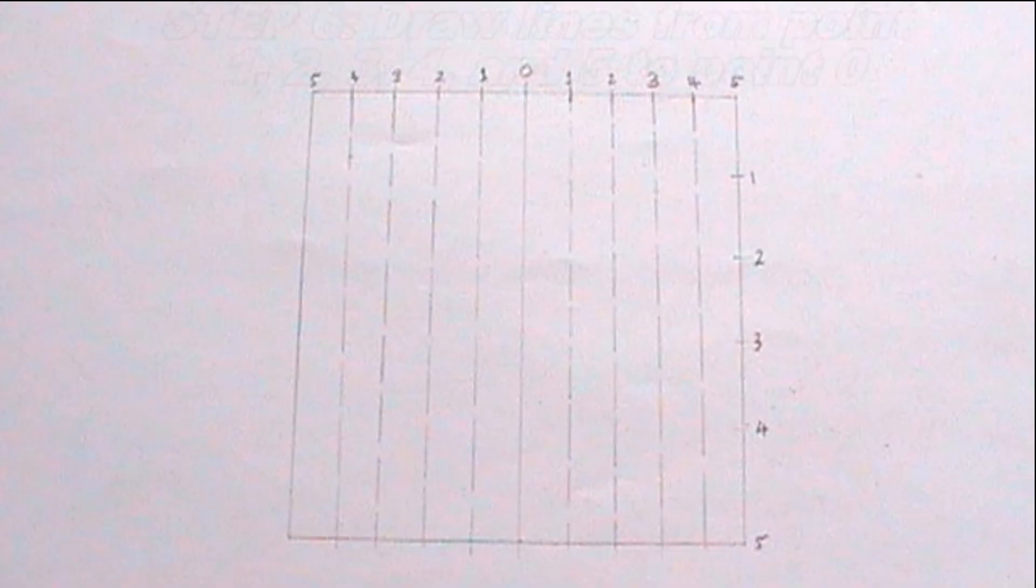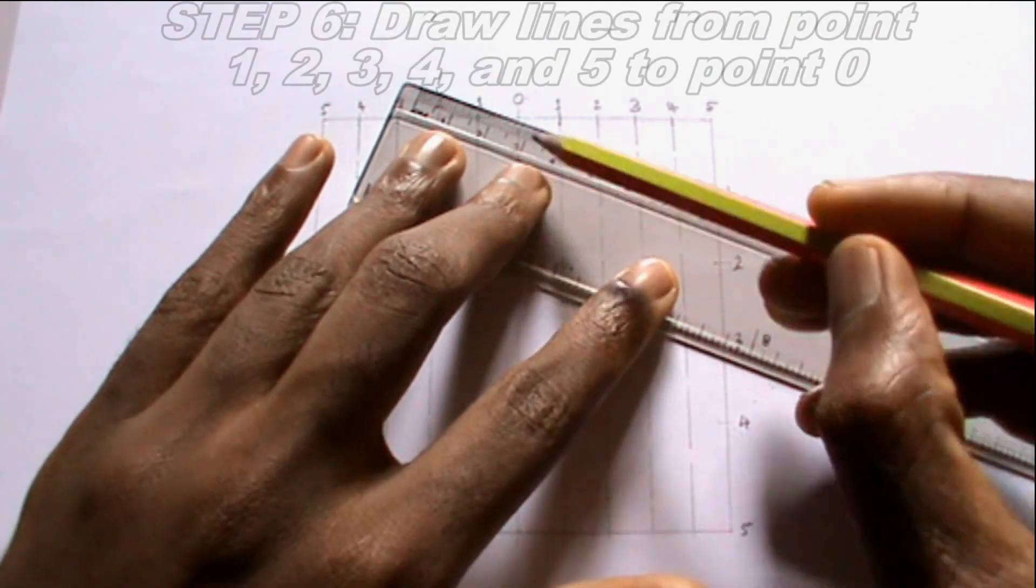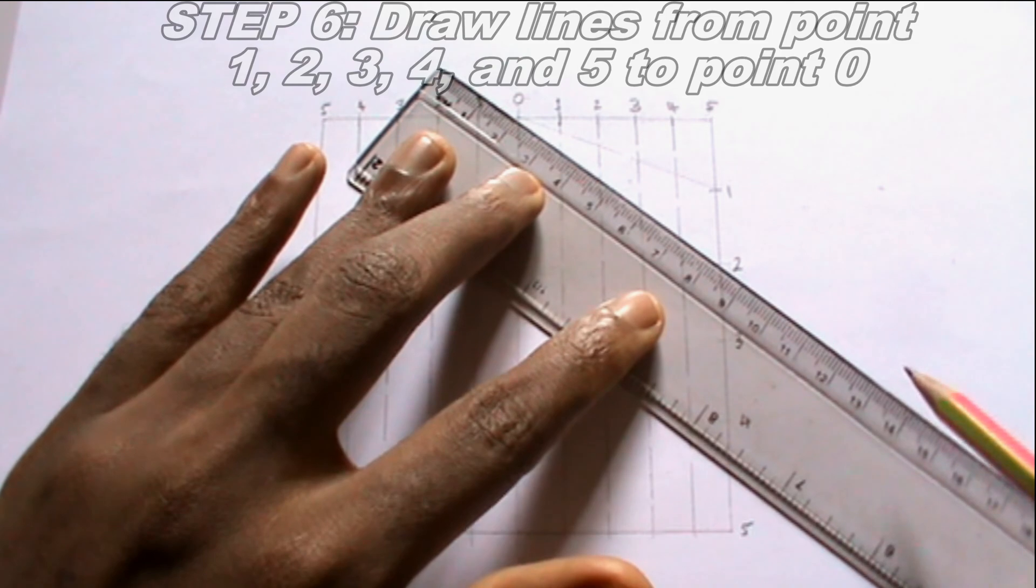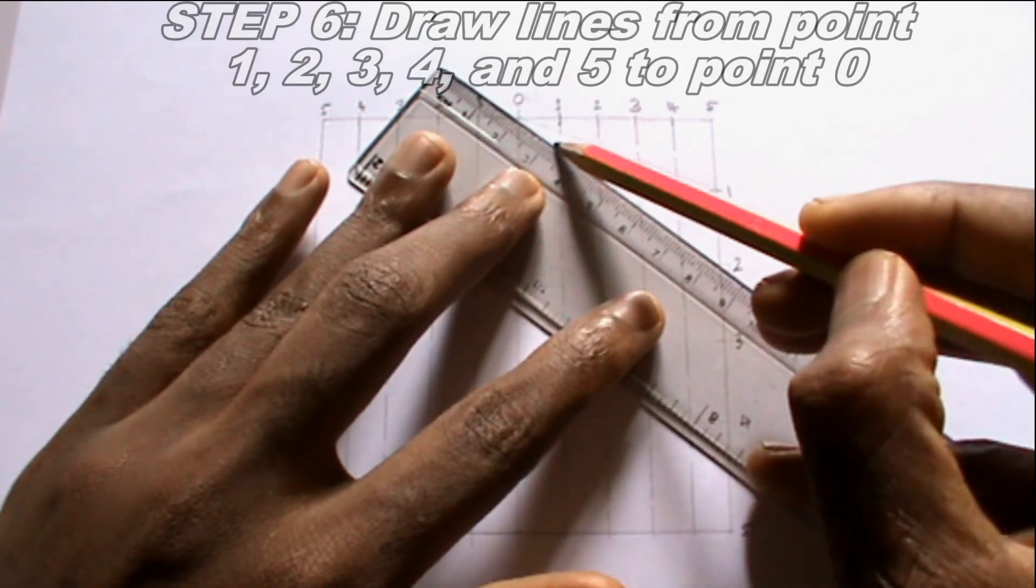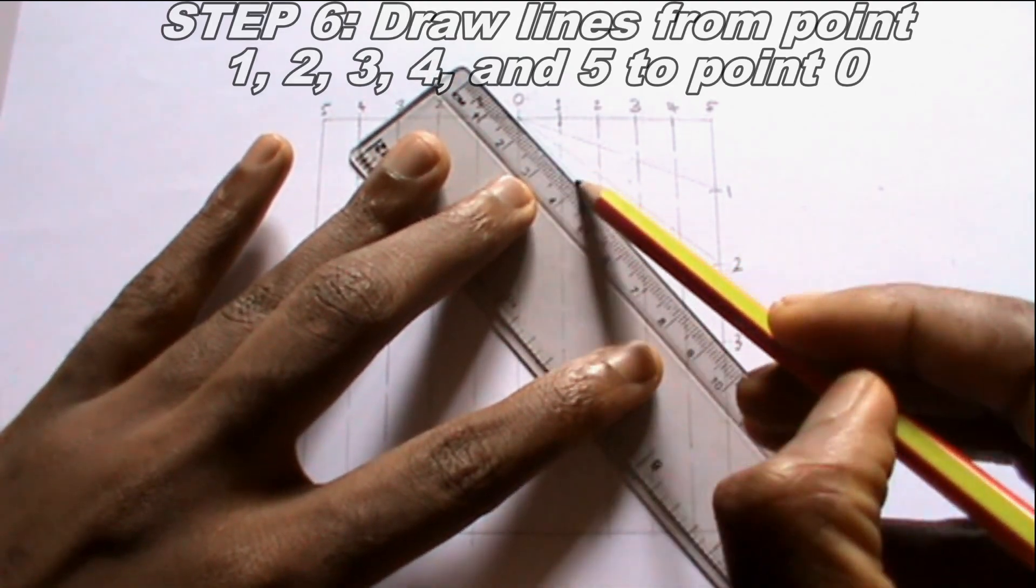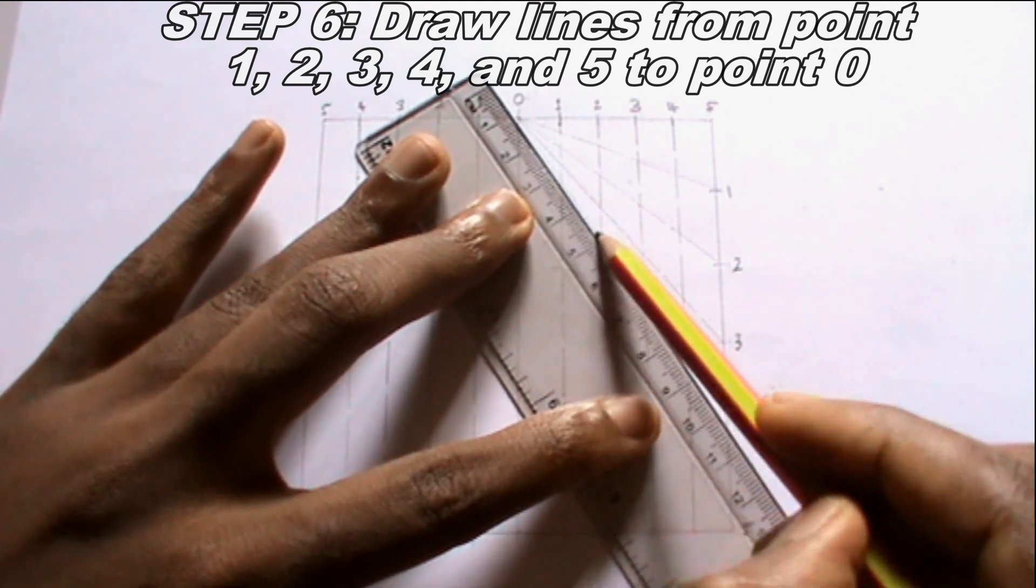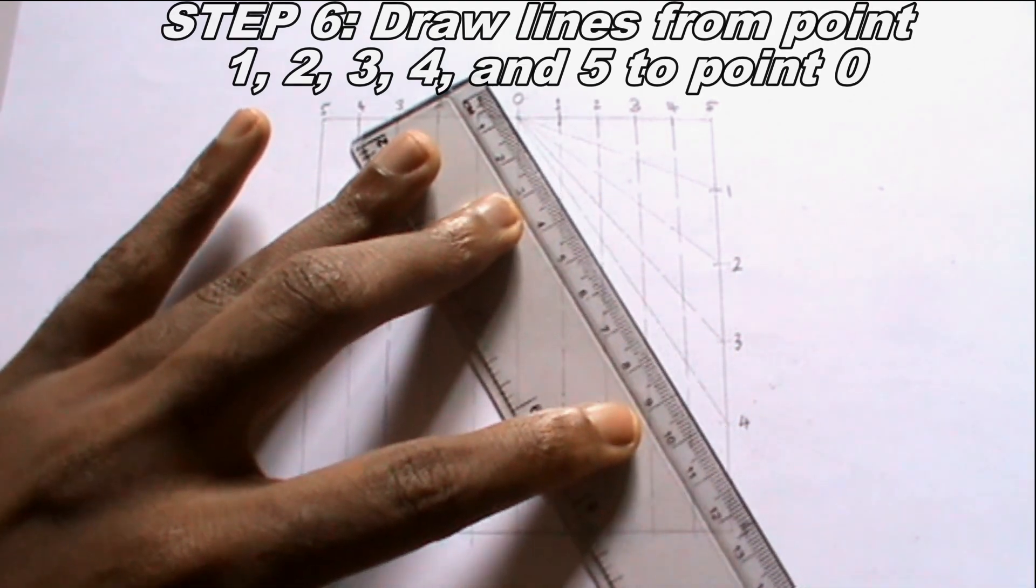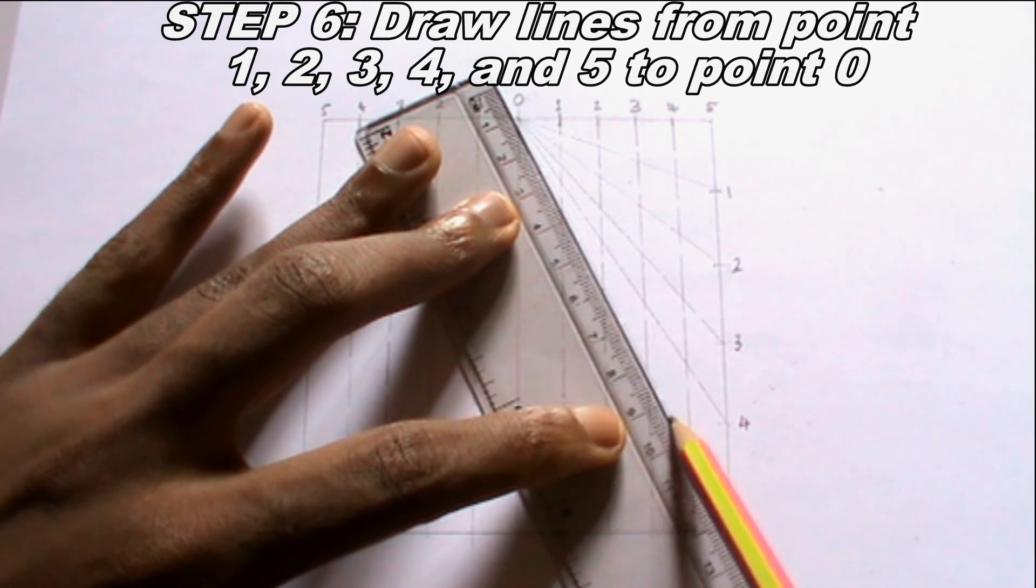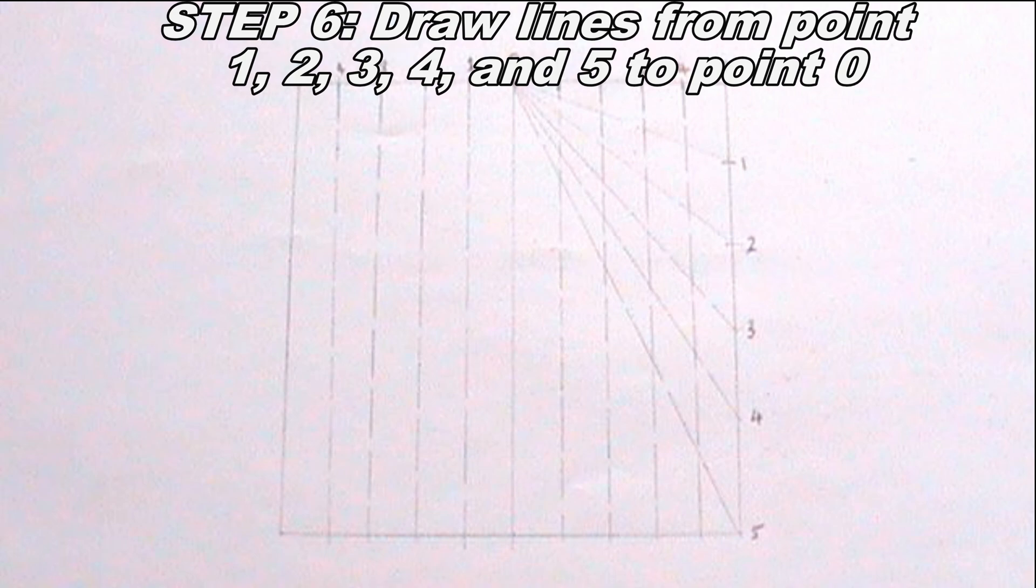The next thing I will do is to draw lines from the points I just marked to point 0. I will repeat these same procedures on the other half of the rectangle.